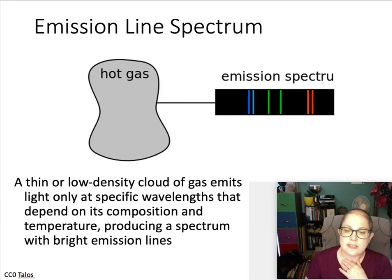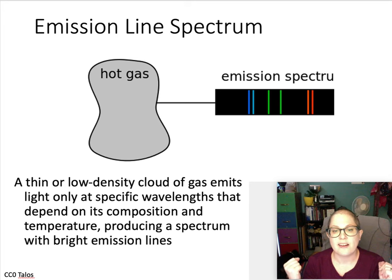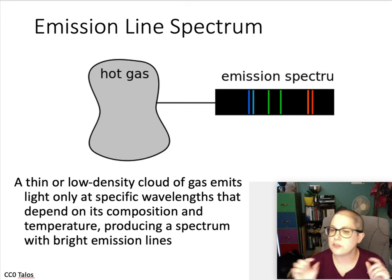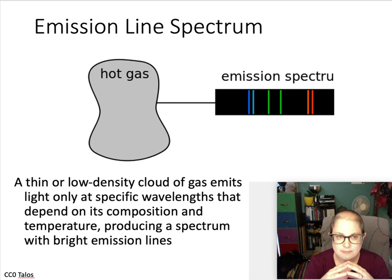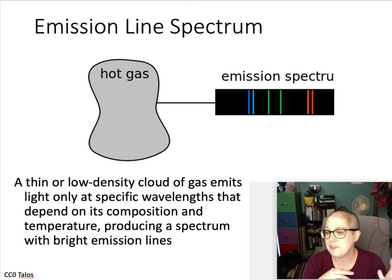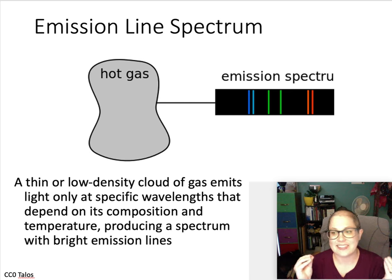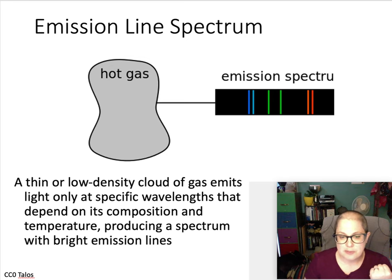Next is an emission spectrum. This usually comes from looking at a gas that is hotter than its surroundings. When you put the light through a prism, instead of seeing all the colors you only see certain specific colored lines. Most modern LED light bulbs actually have this type of spectrum, so if you walk around with a diffraction grating and look at lights in your house, you'll likely see an emission spectrum.